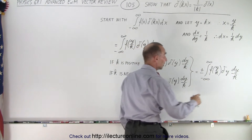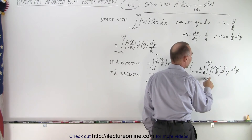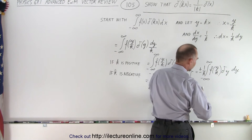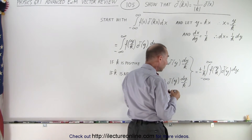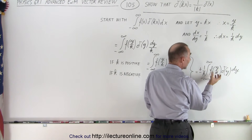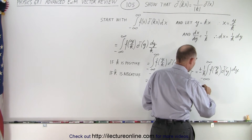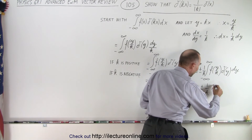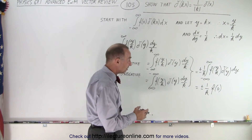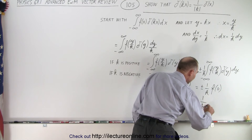The k can come outside the integral sign, giving us plus or minus 1 over k times the integral. Now this looks familiar — we have a function multiplied times the delta function. The delta function of y, when integrated from minus infinity to infinity, simply pulls out the function evaluated at zero. So this equals plus or minus 1 over k times f(0). We can write plus or minus 1 over k as 1 over the absolute value of k, giving us 1 over |k| times f(0).